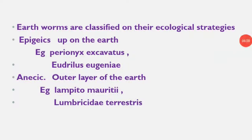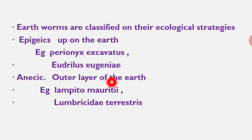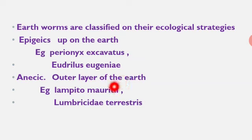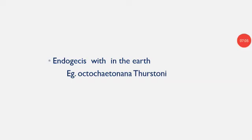Anecic is derived from the Greek word meaning 'up from the earth' or 'outer layer of earth.' These earthworms form permanent burrows deep in the mineral layers of the soil. They draw organic matter from the soil surface down into these burrows for food. Examples: Lambito mauritii and Lumbricus terrestris.